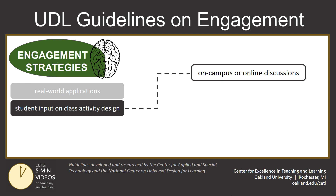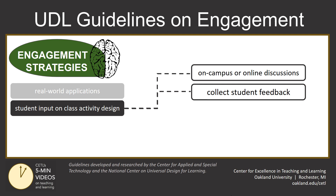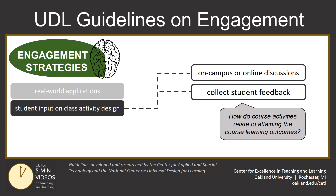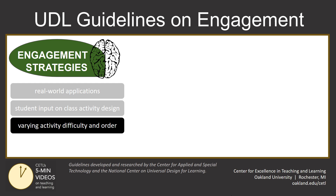Ask them to decide whether certain discussions take place online or in a face-to-face class session, or take the class temperature by collecting regular and informal feedback on how students see activities relating to the attainment of learning outcomes. This kind of feedback can help your work as an instructor, but it can also force students to consider how they can better align their work and effort to achieve learning outcomes.